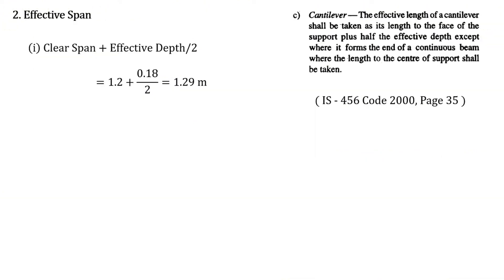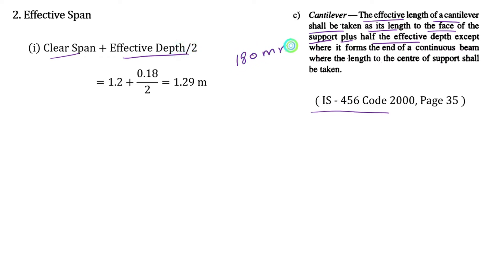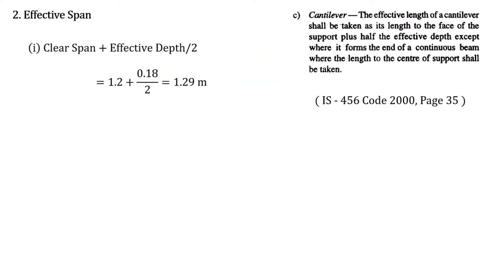Now we are going to find the effective span. As per the code book, the effective length of a cantilever shall be taken as its length to the face of the support plus half the effective depth. So it will be clear span plus effective depth upon 2. The effective depth is 180 millimeter; when we convert that into meter it will be 0.18. In this way, the effective span will be 1.29 meter.